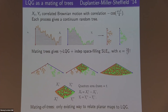This is really important because it is the only known way to relate random planar maps to Liouville quantum gravity. For random planar maps decorated by, say, a spanning tree, you can find a bijection between a pair of trees and the planar map, and take a scaling limit to get these continuum random trees.